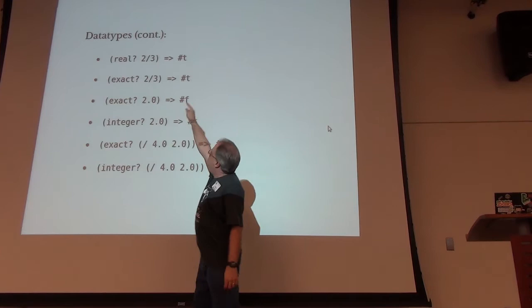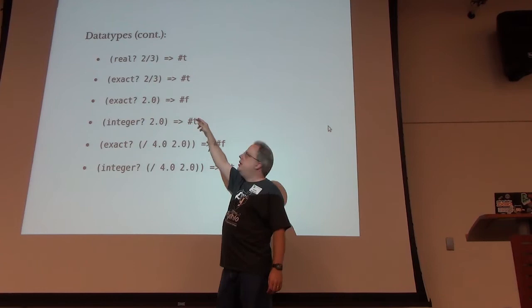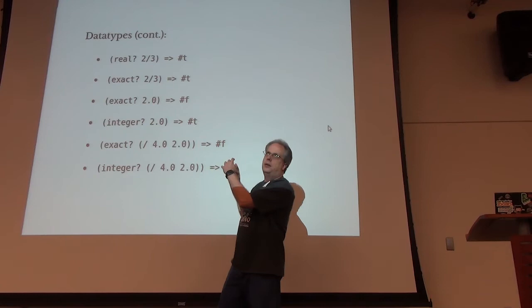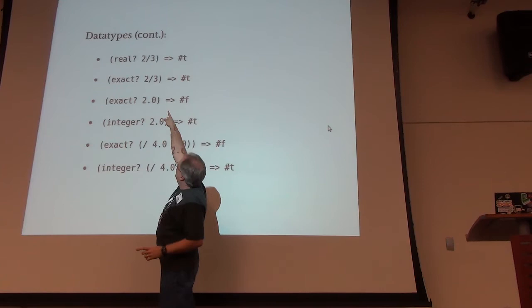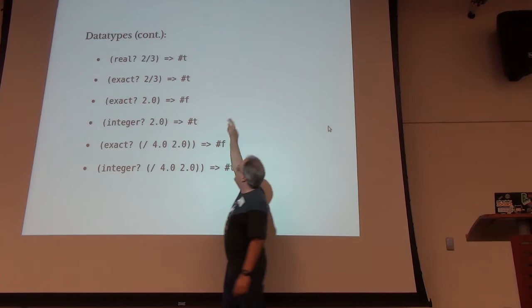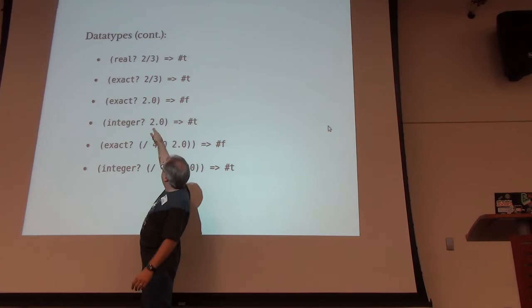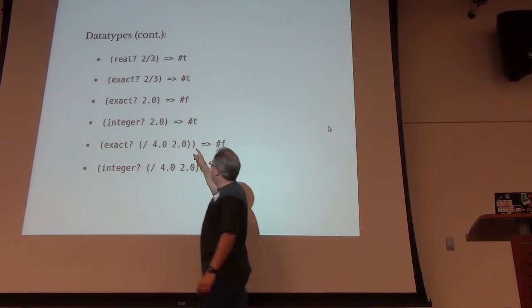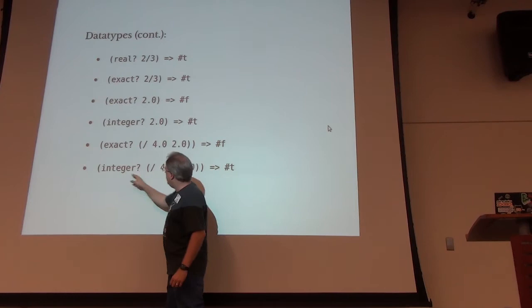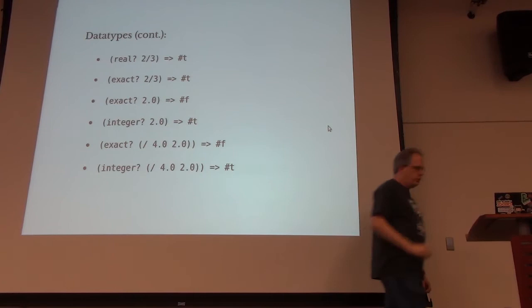Another data type detail: 'rational 2/3' — that's not division, that is actually two-thirds. Scheme has the ability to represent exact numbers, so you're not converting everything to a float like Perl does. So 2/3 is exactly two-thirds, as opposed to 2.0, which is a float that's never going to be exactly two-thirds according to computer math — so that exactness check comes back false. However, 2.0 is still considered an integer.